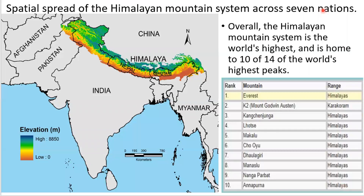Next, we will be learning about the Himalayas. This map shows the spatial spread of the Himalayan mountain system across seven nations: Afghanistan, Pakistan, India, China, Nepal, Bhutan, and Myanmar. In Myanmar, the Himalayas are called Arakan Yoma. The northern mountains actually consist of 10 of the 14 highest peaks of the world, and the Himalayas alone have 9 of those 14 highest peaks.